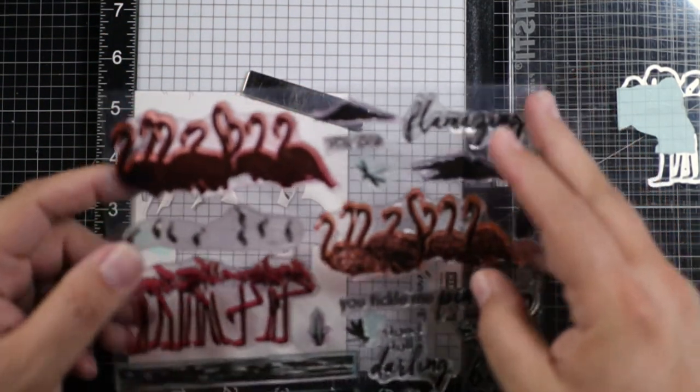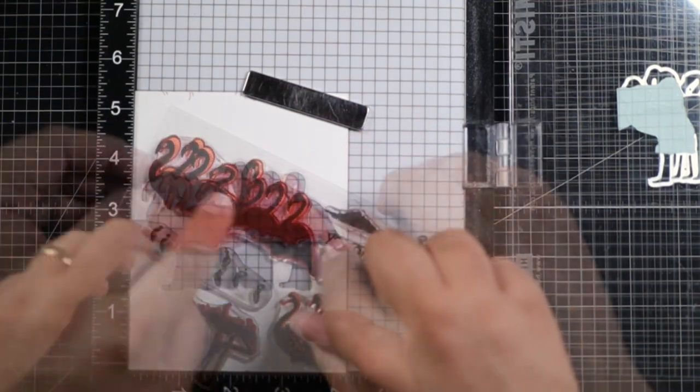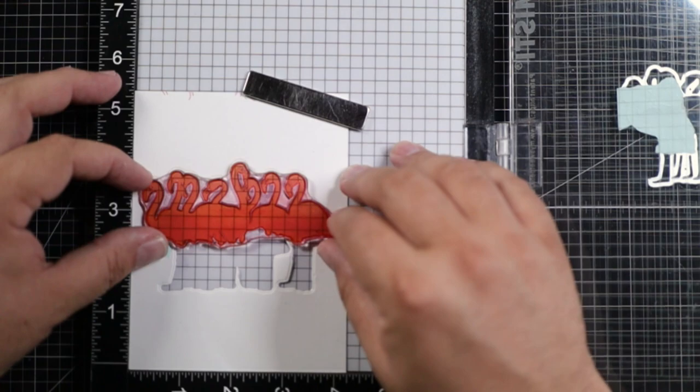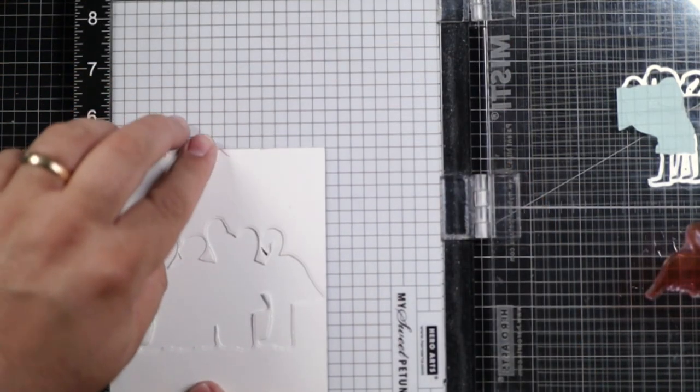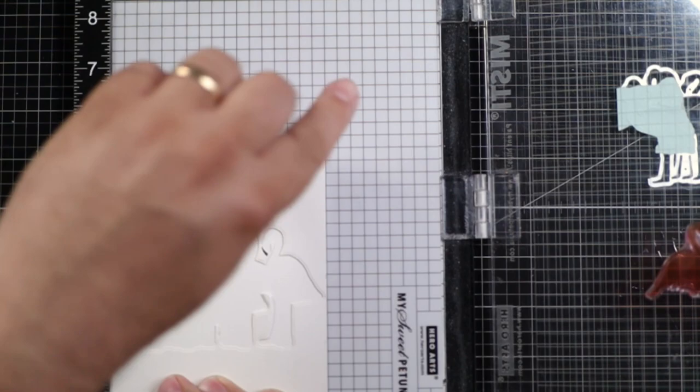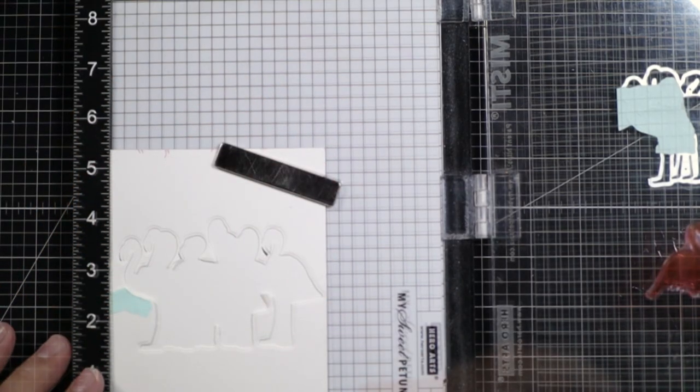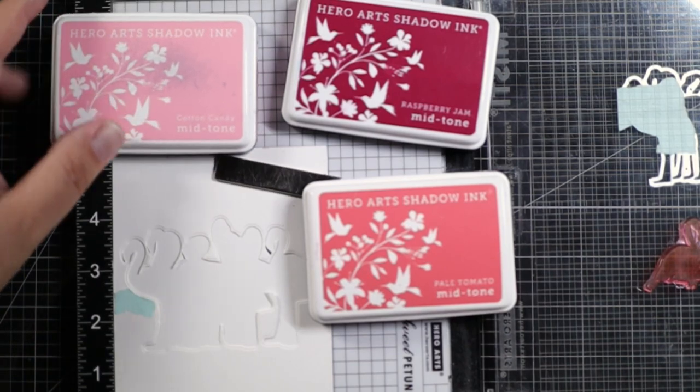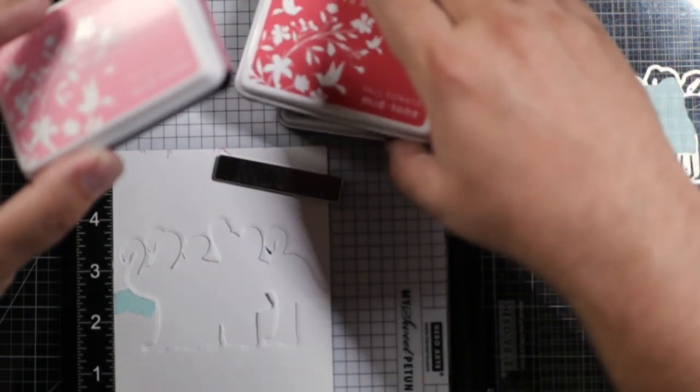But here I have die cut the flamingo die out so that I can use it as a guide for placing my flamingos down on my card front. I'm not gonna die cut them out for this project but this negative space here is wonderful for helping me to line up my layering stamps perfectly.